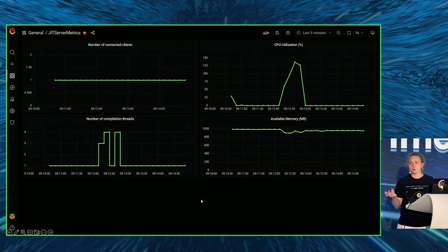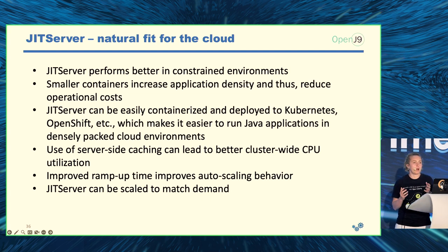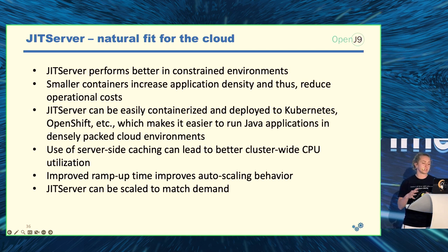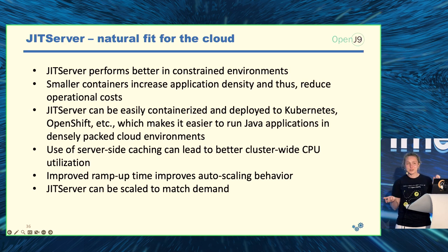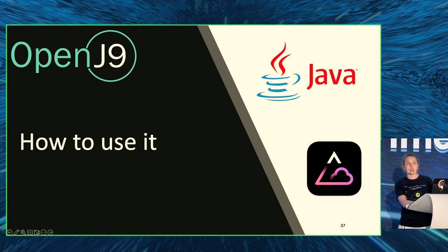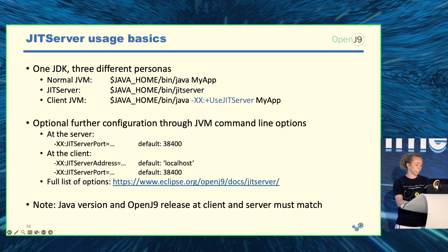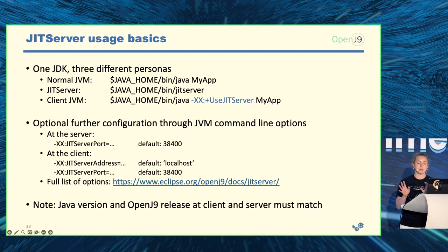Overall, I hope these experiments show that JIT server is a natural fit for the cloud. It performs better in a constrained environment, increases application density, reduces operational costs by 20 to 30 percent, enables containerization managed by Kubernetes, and enables better cluster-wide CPU utilization and improved auto-scaling. To use it: if running from the command line, the JIT server can be started from the OpenJ9 bin directory just by typing `jitserver`. To use it in your app, use the `-XX:+UseJITServer` flag.